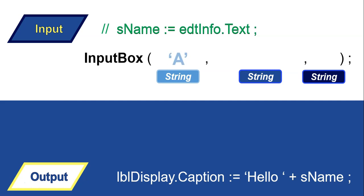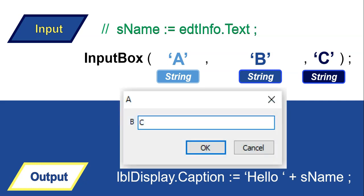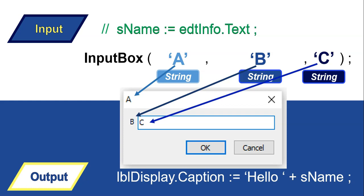Let's say those strings are A for the first one, B for the second, and C for the third, just so we can see what it looks like. When you run it, a box will appear on the screen. The first string A goes to the title at the top of the box. Whatever we put in the second string goes in front of the edit control, and whatever we put in the third string goes inside the edit control within the InputBox.